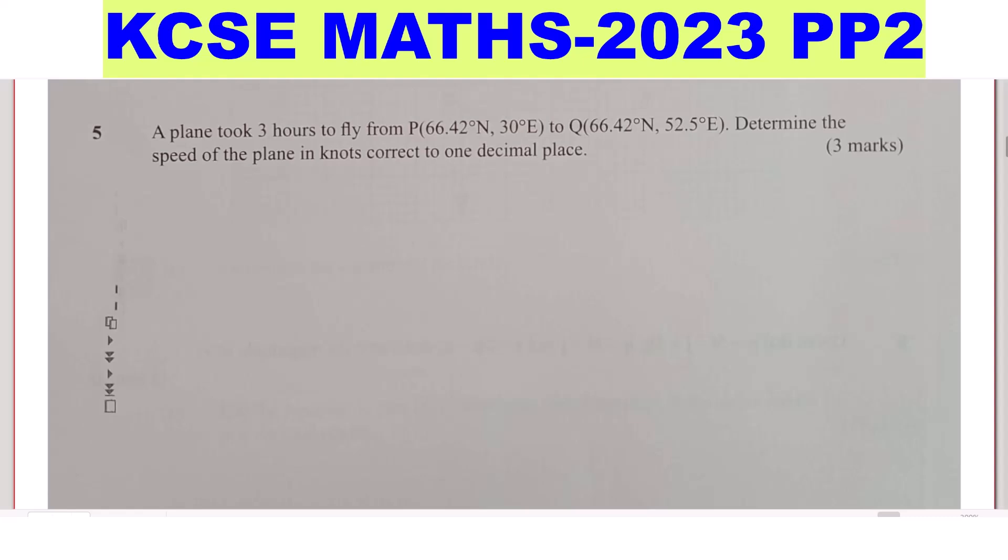When you look at these two places, they are located on the same latitude. So you can just sketch the latitude, which is 66.42, but on different longitudes. The longitudes are different, but both of them are to the east. One is 52.5 degrees east, and another one is 30 degrees east.